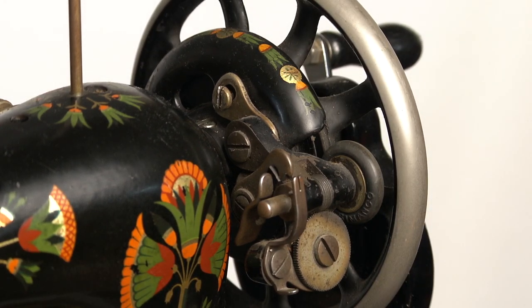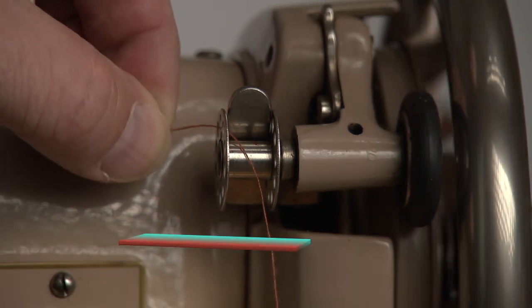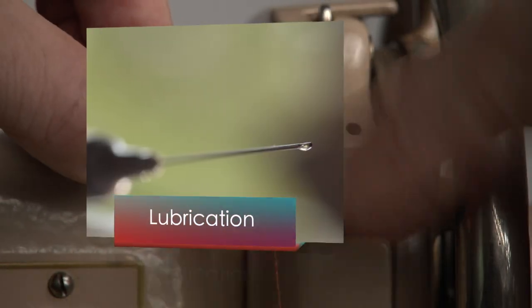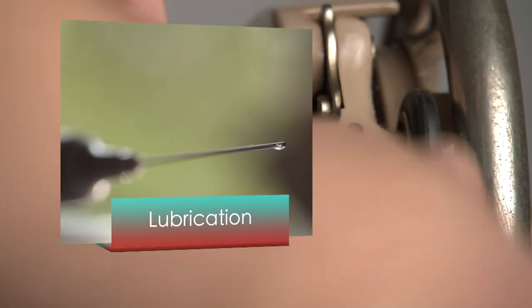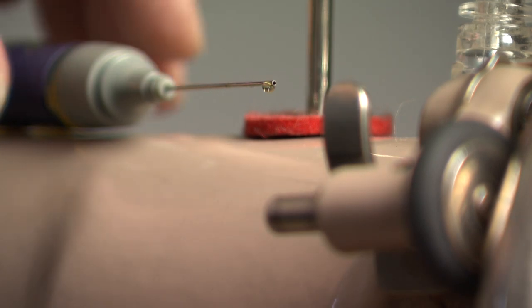Sometimes the right friction comes down to trial and error, but you'll get it right. The unit might be dry. That can be why it doesn't move as you want it to. Don't forget the bobbin winder should be oiled too.